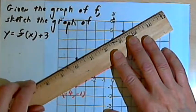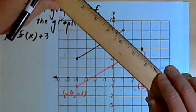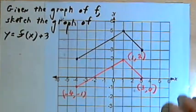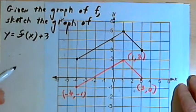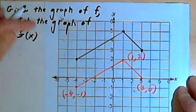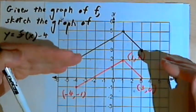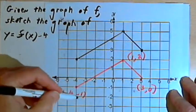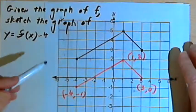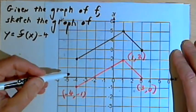I can then connect those three points, and what I have is the image of the original graph shifted up 3 units. Now if instead of a positive 3 I had a negative 4, that would tell me to take the graph and shift everything down 4 units — I would be subtracting 4 from the y-coordinates of all my points. This is called a vertical shift, also known as a vertical translation.